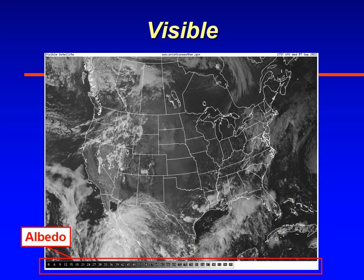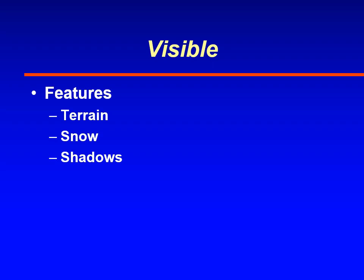Here's an example of a visible satellite image. On most visible satellite images there is a scale at the bottom showing the percentage of reflected sunlight — that is your albedo. Some features you can see on a visible satellite image include terrain, snow, and shadows. I've got examples of all of these and we'll step through them.